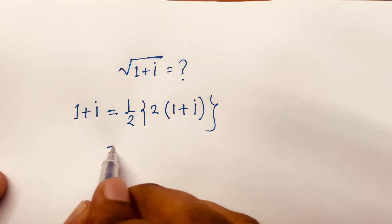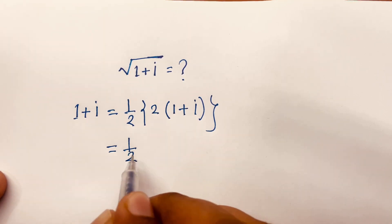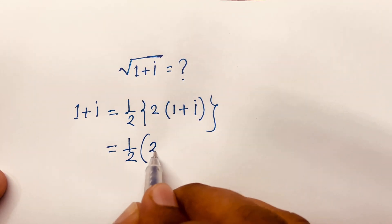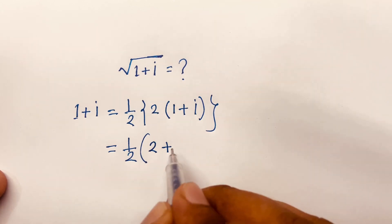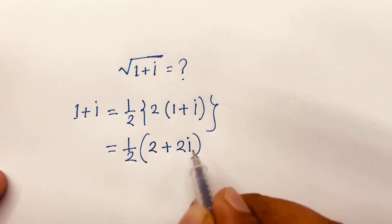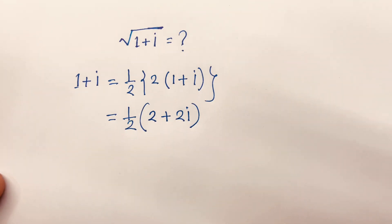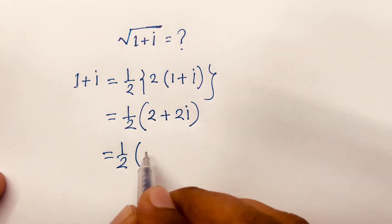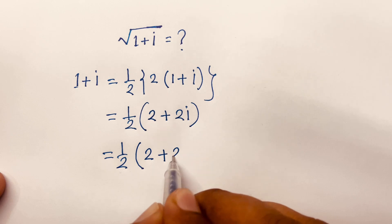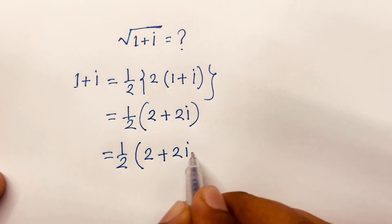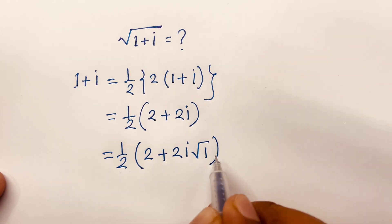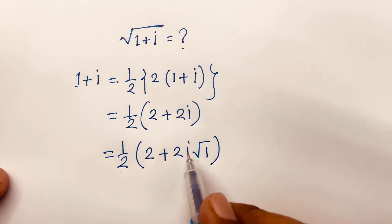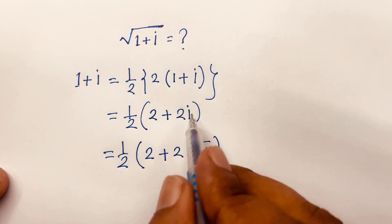Now, I can say here is 1 over 2 times 2 times 1 is 2 plus 2 times i, which is equal to 2i. Then I can say 1 over 2 times 2 plus 2i, and square root of 1 — look, square root of 1 equals 1, so 1 times 2i will be 2i.